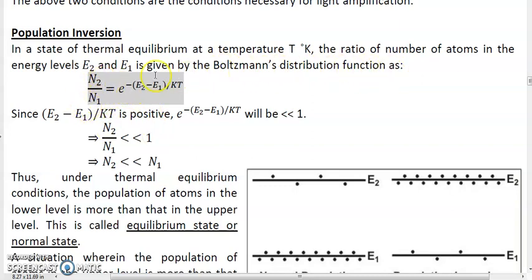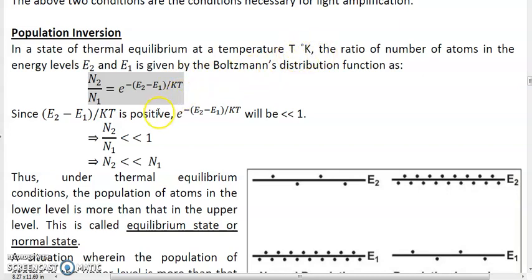The Boltzmann distribution function basically gives us the ratio of the populations of the upper and lower energy levels. In this formula, e2 is the upper energy level, e1 is the lower energy level. K is the Boltzmann constant which has a value of 1.38 into 10 raised to the power minus 23, and t is the temperature in Kelvin scale.